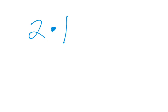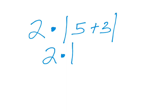So if I have 2 times the absolute value of 5 plus 3, I do the absolute value grouping symbol first, but I keep the absolute value bars there. That gives 2 times the absolute value of whatever 5 plus 3 is. Now 5 plus 3 is 8, so we write 2 times the absolute value of 8. Since there's no more arithmetic inside the bars, the absolute value of 8 is 8, giving 2 times 8, which is 16.